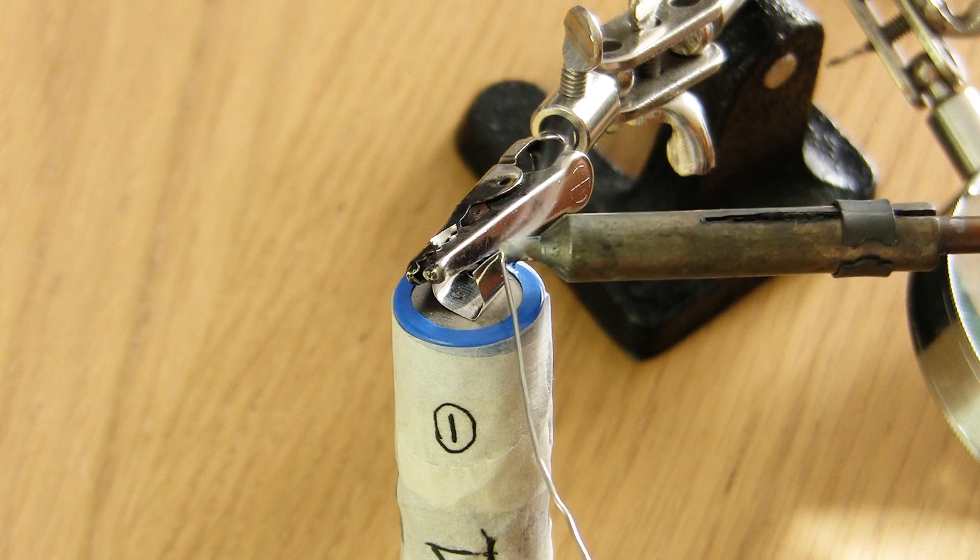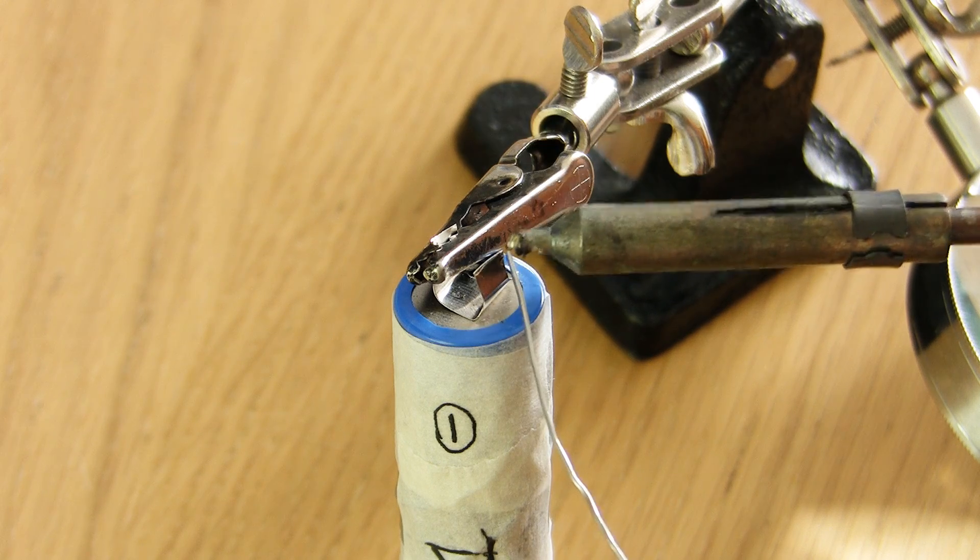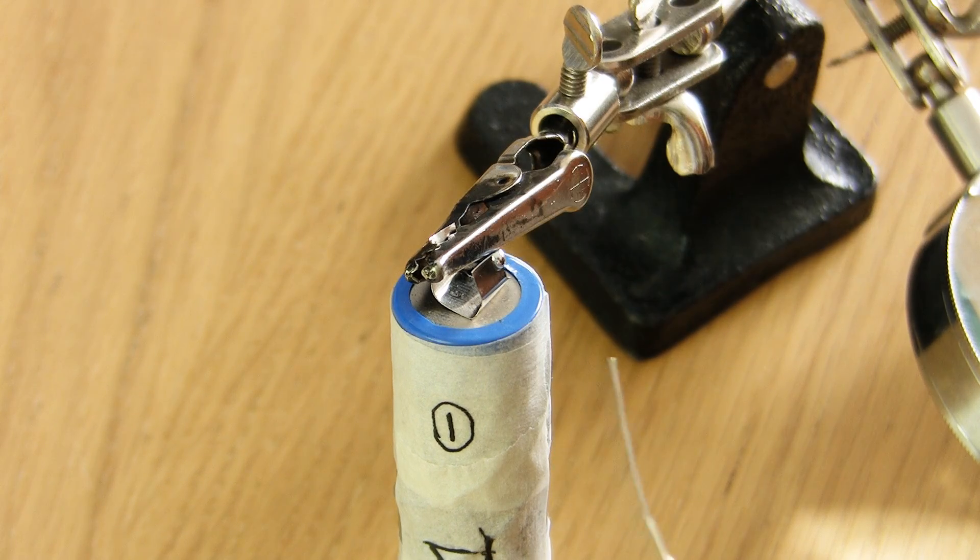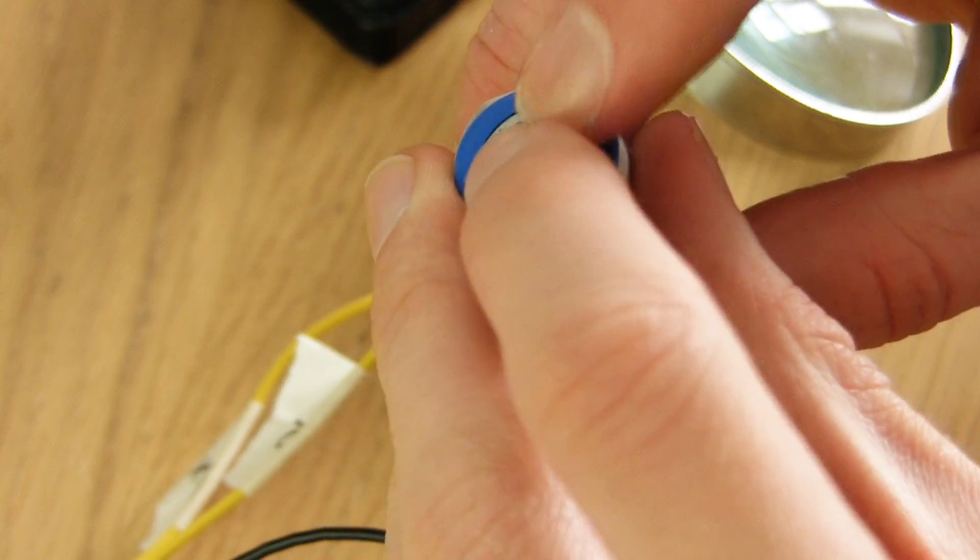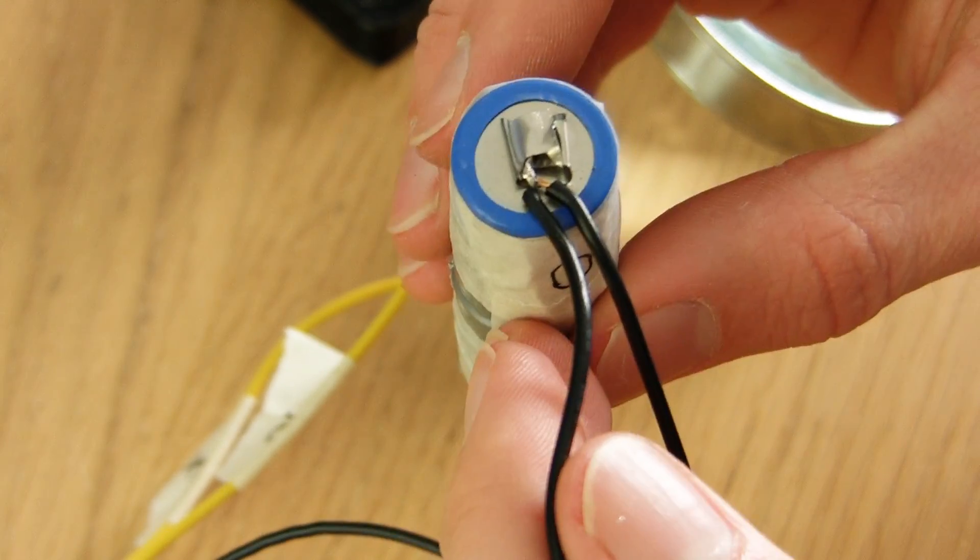Next we want to prepare our battery by adding some solder to it. Make sure the contact is very brief because heat and batteries don't mix. We'll solder on the ground cable and bend over the contacts to make it more secure.